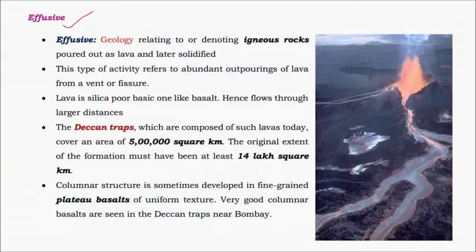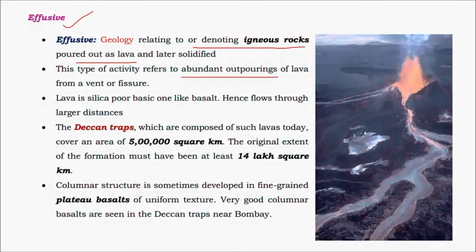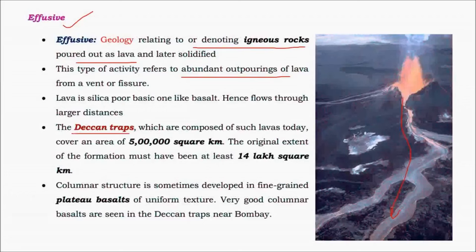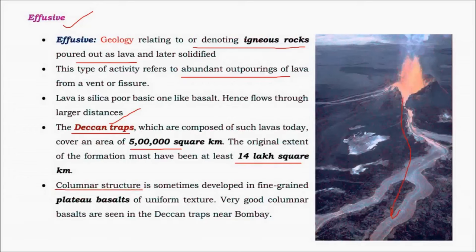The next type is effusive volcanism, related to igneous rocks generated from cooling lava. There is abundant outpouring of lava that is mainly basaltic in nature, hence less viscous due to low silica content. It flows over very long distances creating flat landforms like the Deccan Traps. The Deccan Plateau was formed by this effusive volcanic activity and originally covered about 4 lakh square kilometers, now about 5 lakh square kilometers, having undergone weathering and erosion. Columnar structures can also form from this activity.